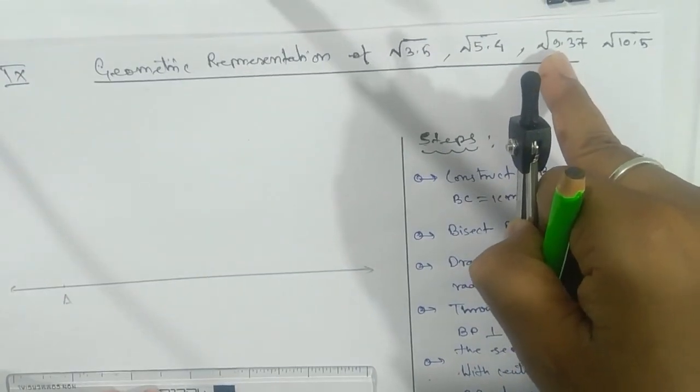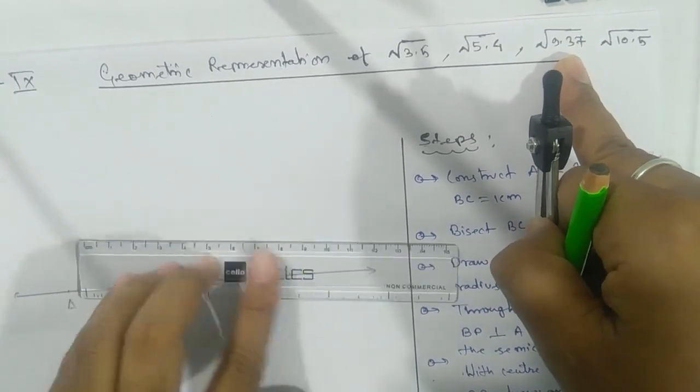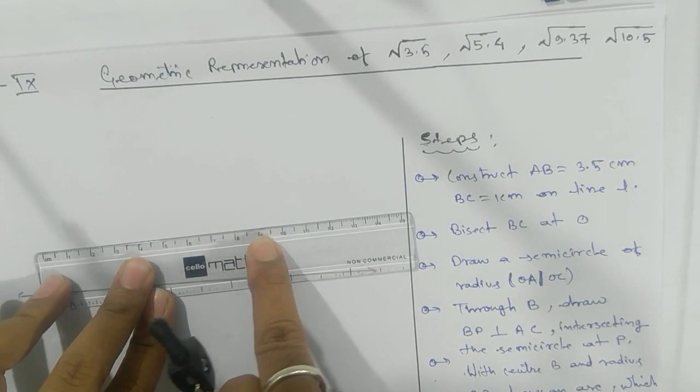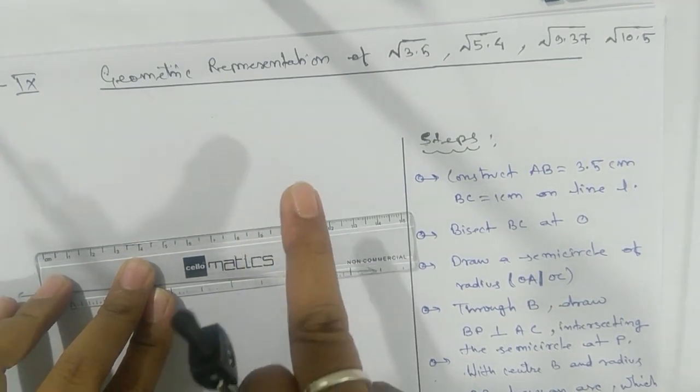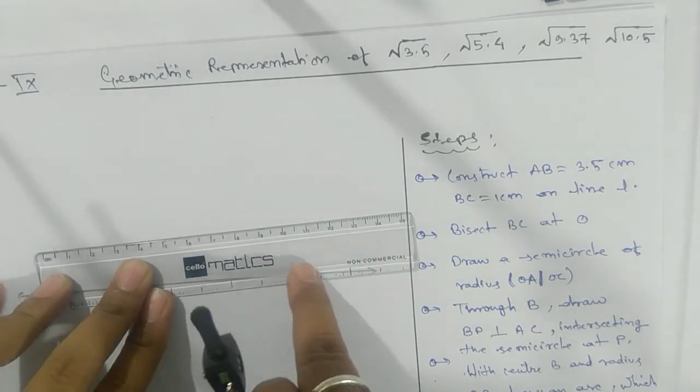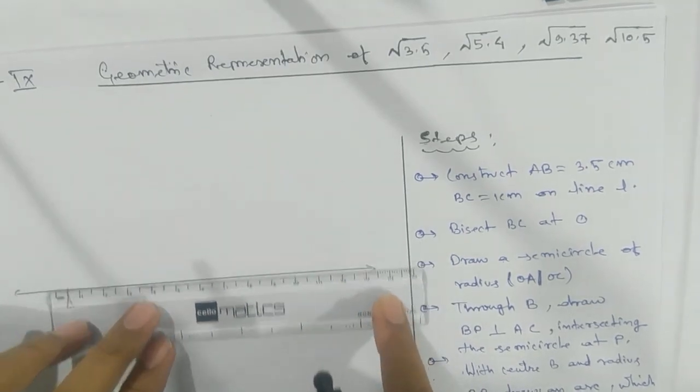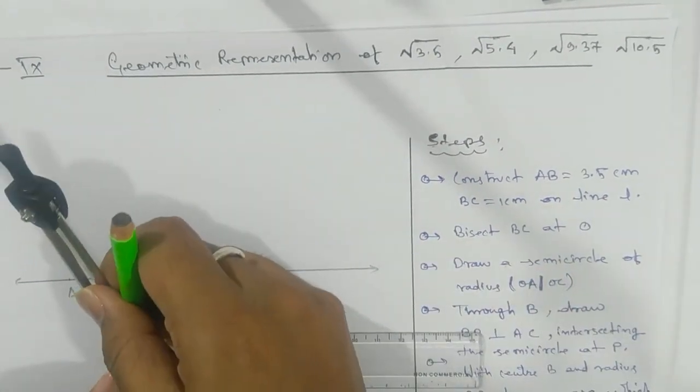If they are asking for √9.37, in the ruler we don't have 9.37, so we'll go approximately to 9.3. We'll choose 9.3, but when writing, we'll write 9.37. Okay, so here we have the first one, 3.5. Take the measurement of 3.5 with the help of a compass. You can see here, take an arc - this is your B.